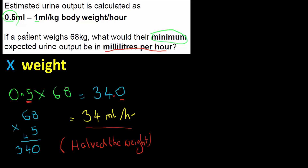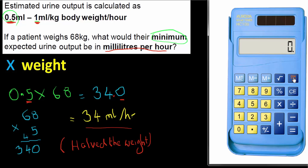I went through this more formally because different questions may use different multipliers. If the question had said 'maximum' instead of 'minimum', I'd multiply by 1, giving the same value as the weight. Calculator check: 0.5 times 68 confirms the answer is 34.